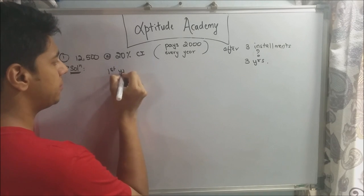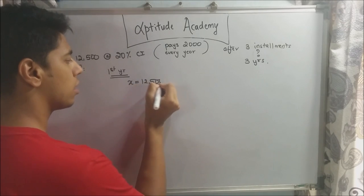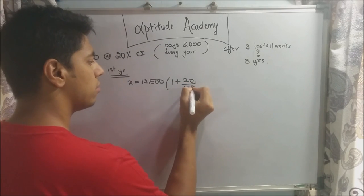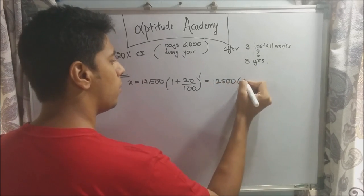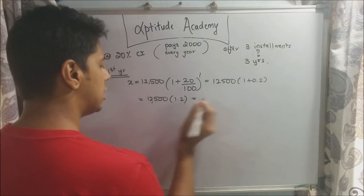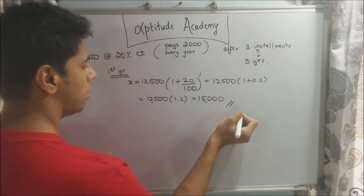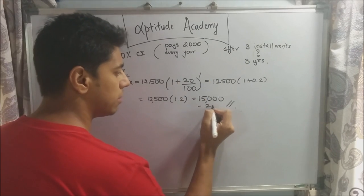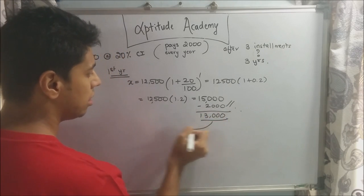At the end of the first year: X = 12,500 × (1 + 20/100) = 12,500 × 1.2 = 15,000. This is what he owes at the end of year one. He then pays Rs. 2,000, leaving 15,000 − 2,000 = 13,000. This becomes the principal for year two.